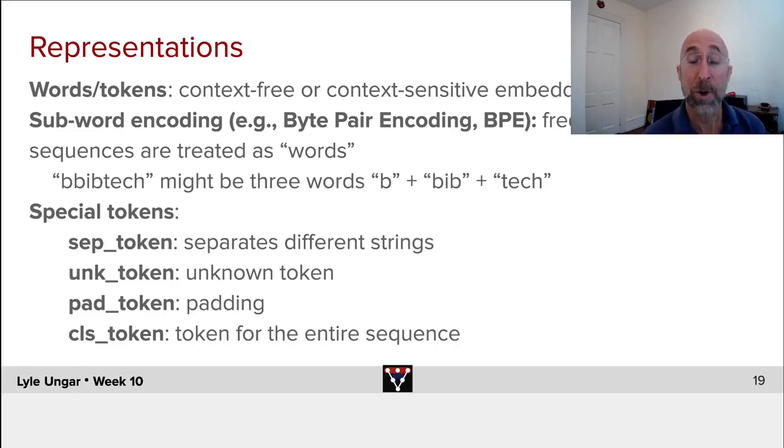Finally, lots of representations used in the advanced systems like BERT, which we'll see later this week, look at a number of special tokens that are added to the text. A separation token, that's put between each sentence, or between each string. If you're concatenating a bunch of tweets, you put a SEP token between each of them.